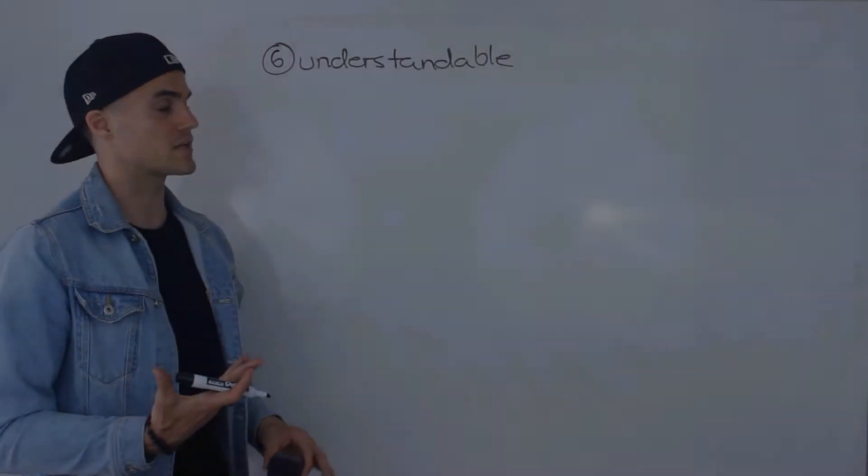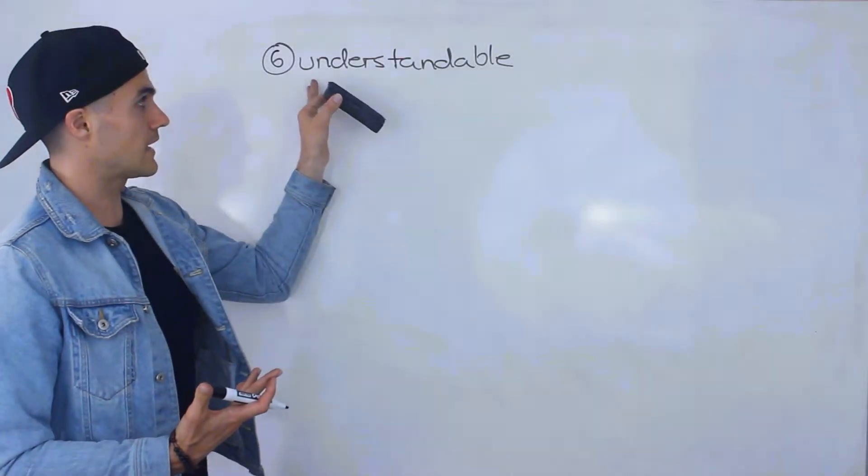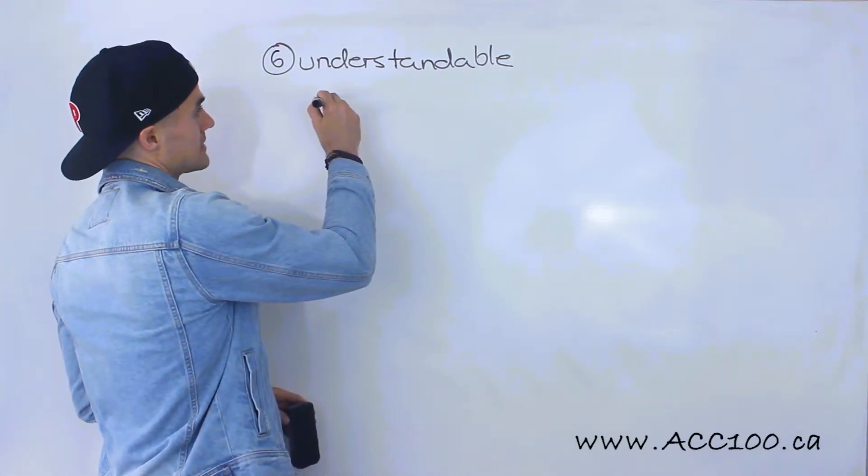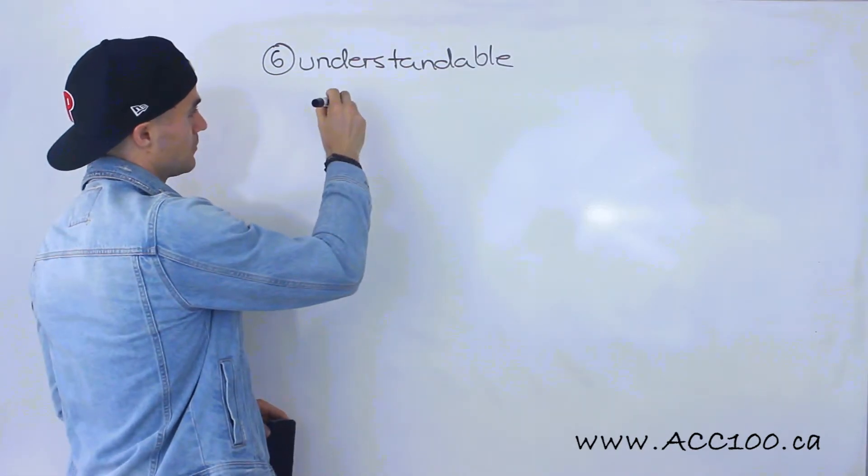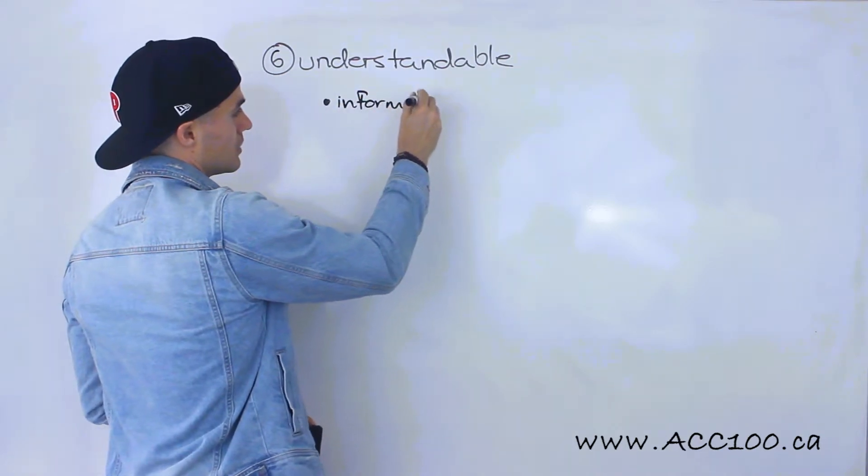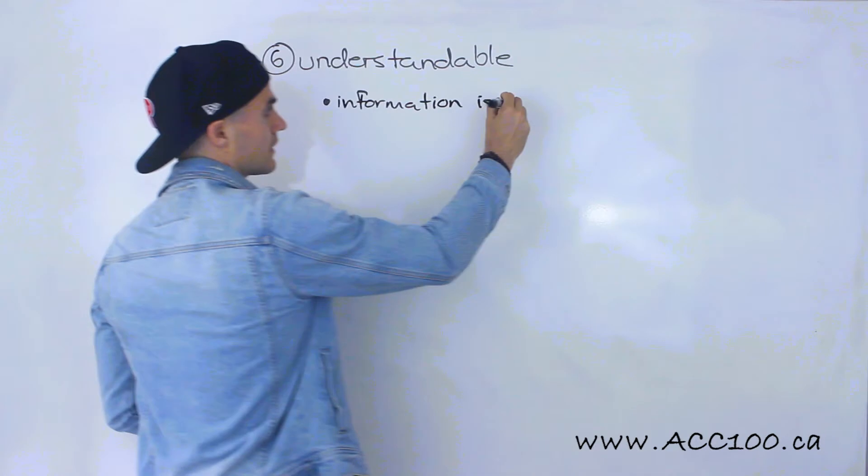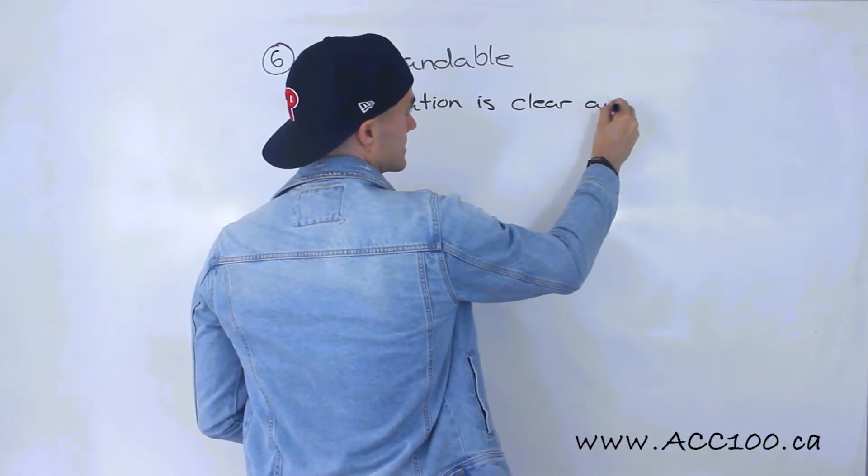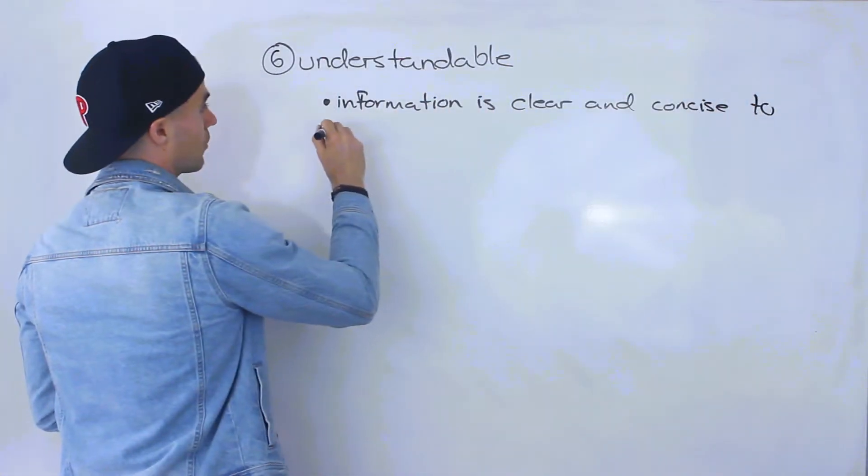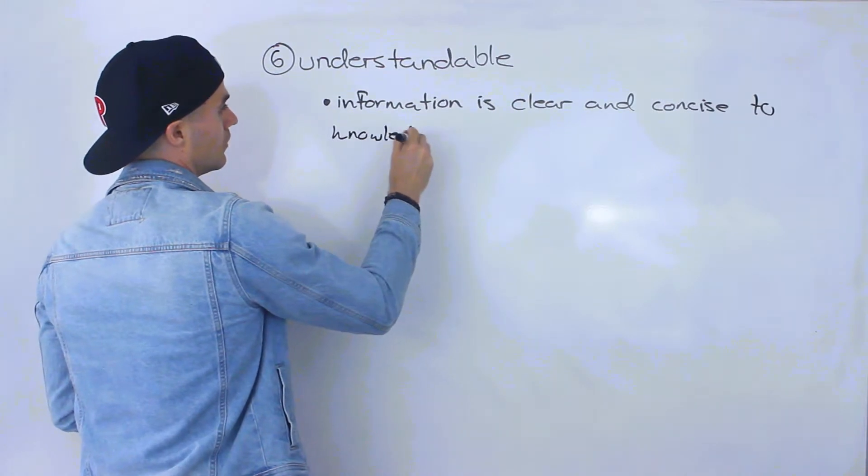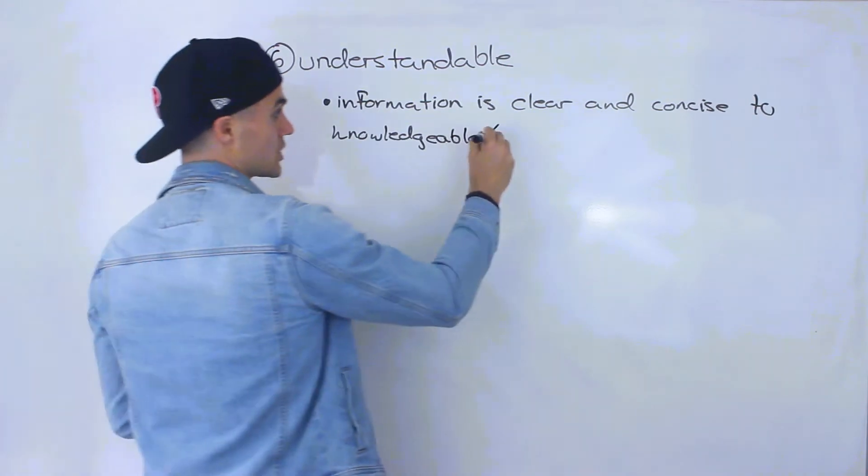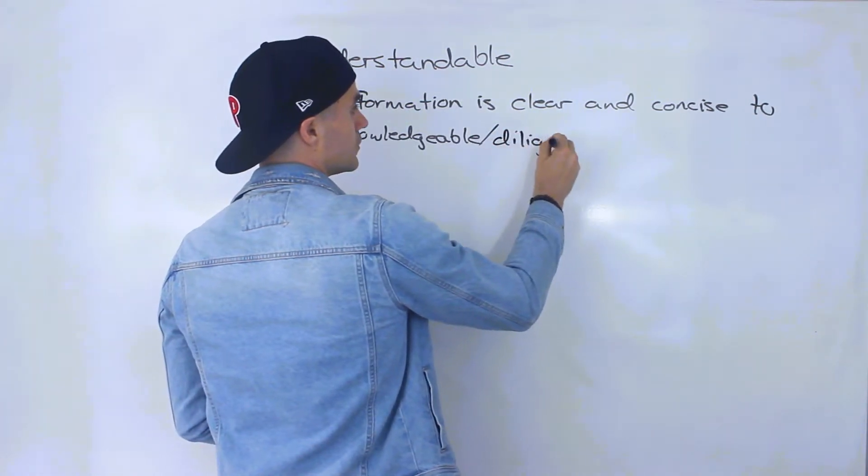And then finally, the sixth qualitative characteristic is information should be understandable. What that means is that information is understandable if the information is clear and concise to knowledgeable or diligent users.